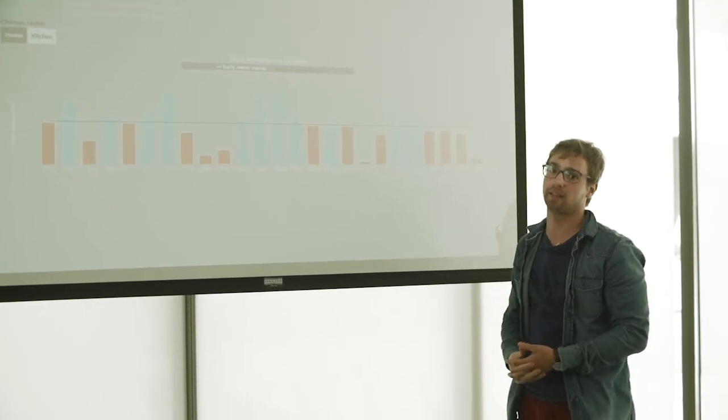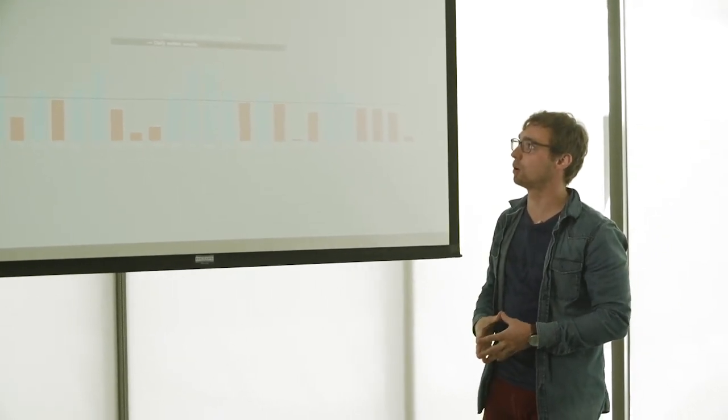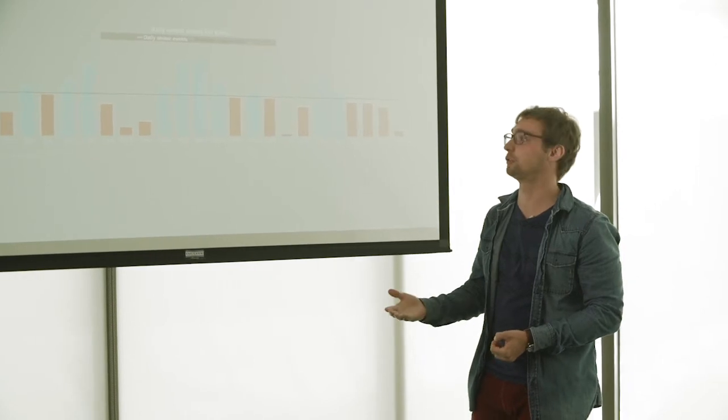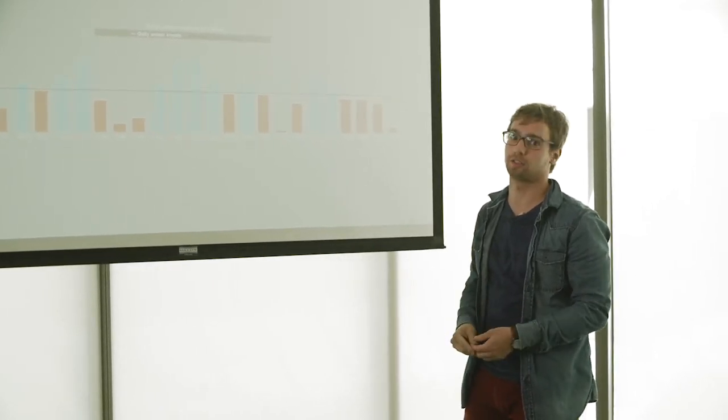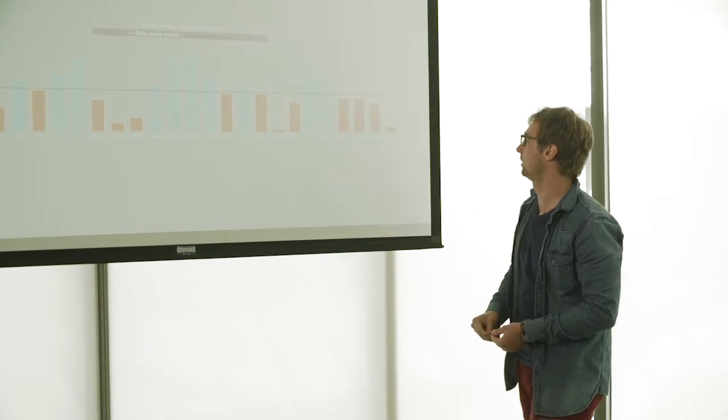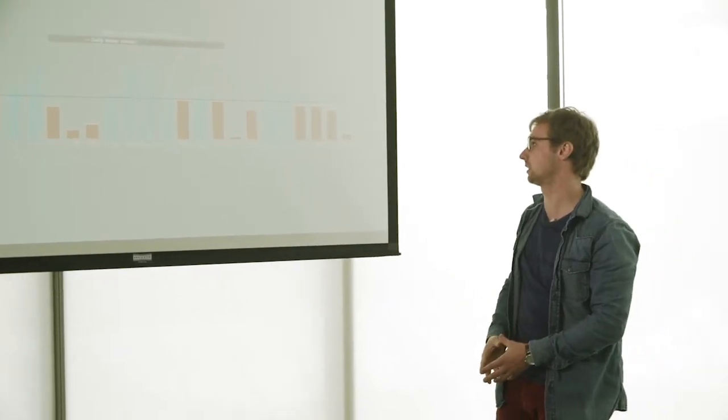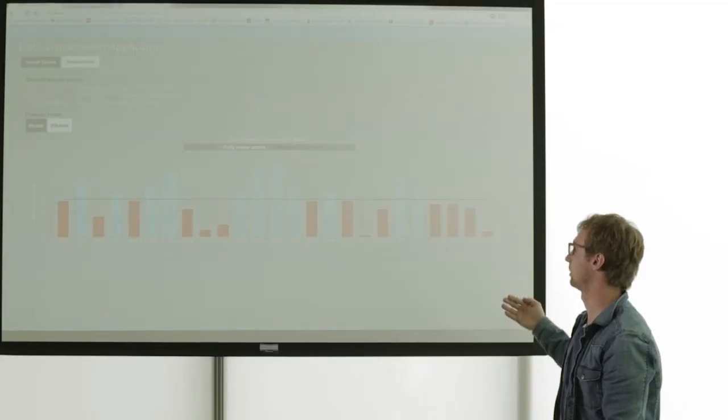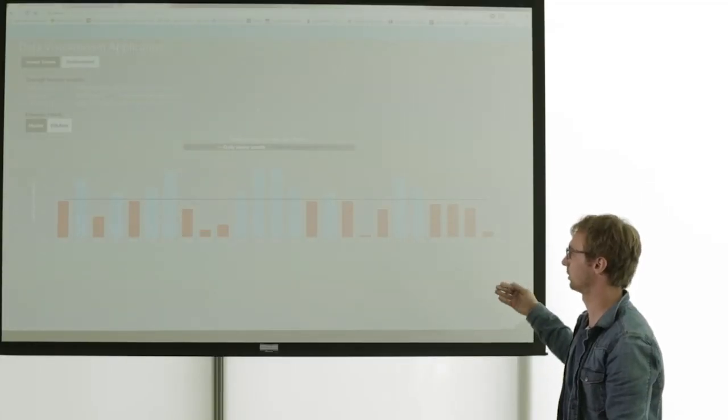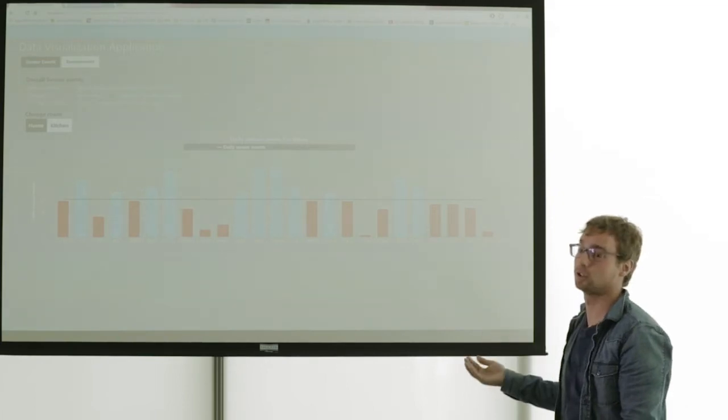A sensor event is mainly when the multi-sensor detects motion or the front door or the fridge are opened. The data visualization shows in blue when the activity or the sensor events were above average or red if it's below average. The aim is to set up this system in a home for older adults. So if you see a decreasing amount of activities, you can call your parents and ask what's happening.